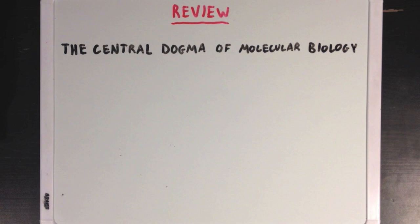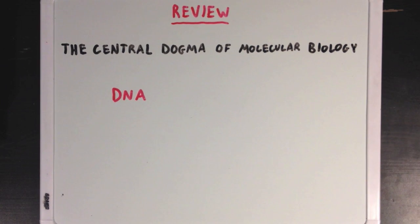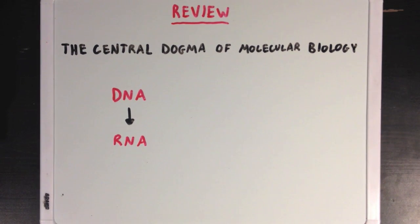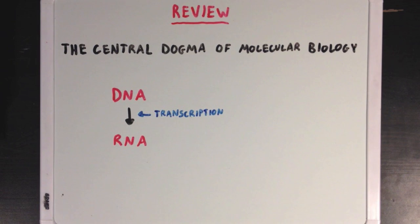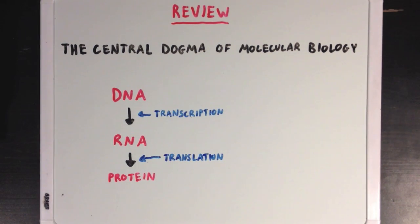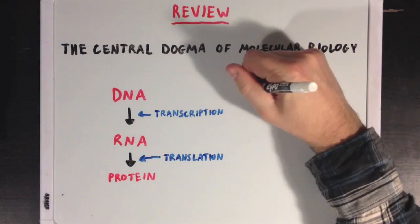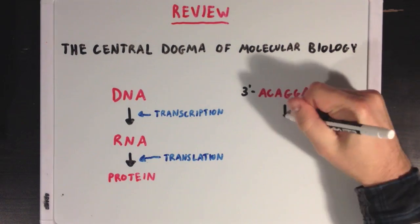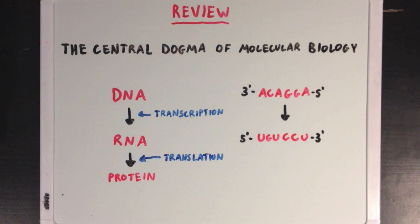The central dogma is just the idea that genetic information in a cell is stored in the form of DNA. This DNA is used to generate complementary RNA through a process called transcription. Looking at a quick example, our short DNA strand here will be used to generate an RNA strand. Remember that A pairs with U or T, and C pairs with G.